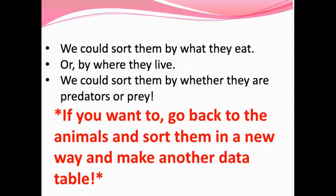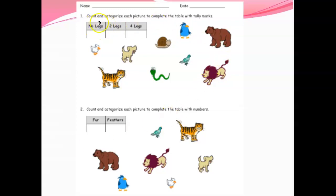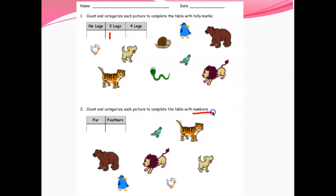I'm going to show you your problem set. You don't have an exit ticket today because your problem set is three pages. The first set is pretty simple — you are counting and categorizing each picture to complete the table with tally marks. Number one is asking you to use tally marks: look at these animals to determine how many have no legs, how many have two legs, and how many have four legs. For example, a duck has two legs so I put a tally by the two-leg part. Next, count and categorize each picture to complete the table with numbers — here we're using numbers instead of tally marks, looking to see if the animals have fur or feathers.